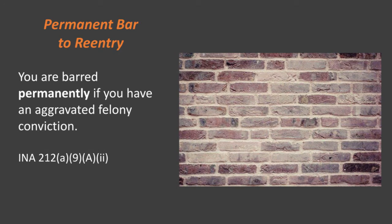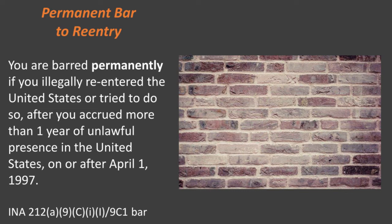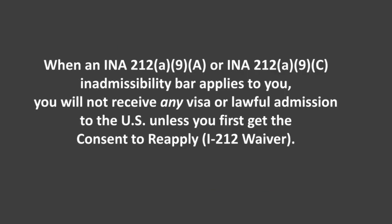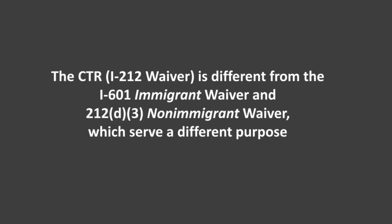The third is the 20-year bar if you were ordered removed more than once, whether as an arriving alien or not. The fourth is the permanent bar if you have an aggravated felony conviction. Examples are controlled substance trafficking, fraud causing a loss of over $10,000, or a theft offense with a sentence of at least one year. The fifth is the permanent bar if you illegally re-entered the US or tried to do so after you were issued a removal order. When any of these bars apply to you, you may not receive any visa or lawful admission to the US unless you first get the Consent to Reapply or I-212 waiver.